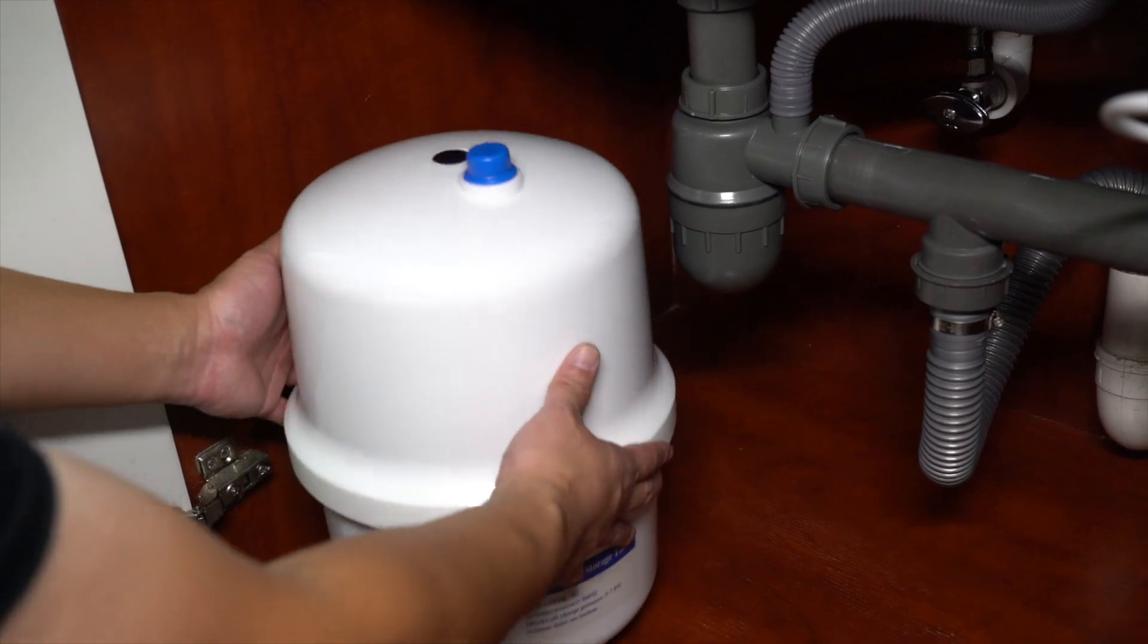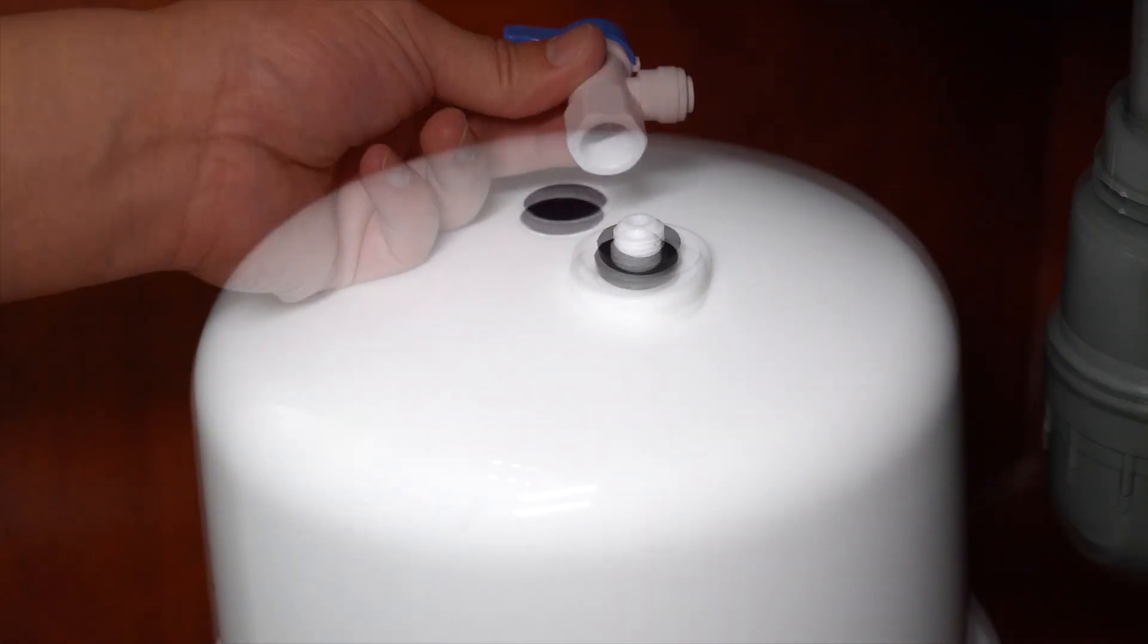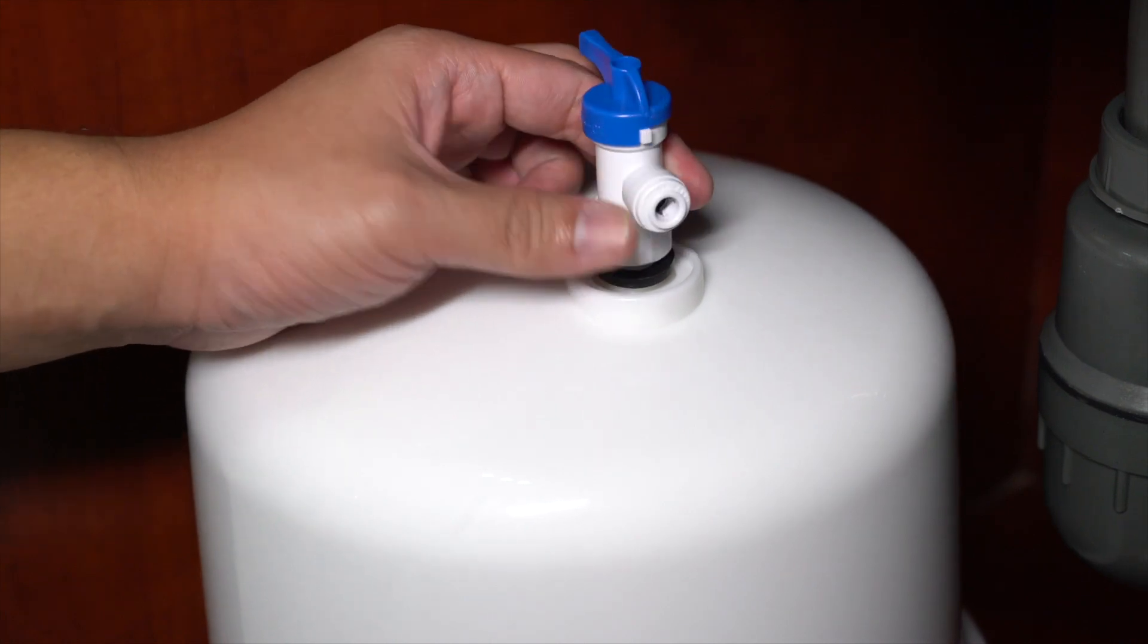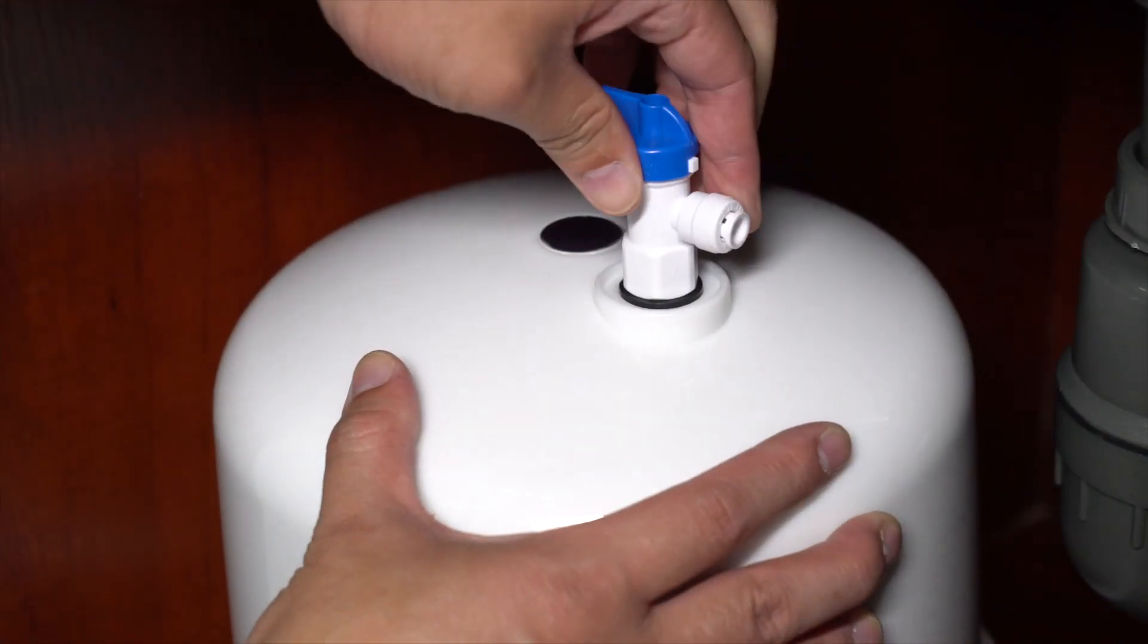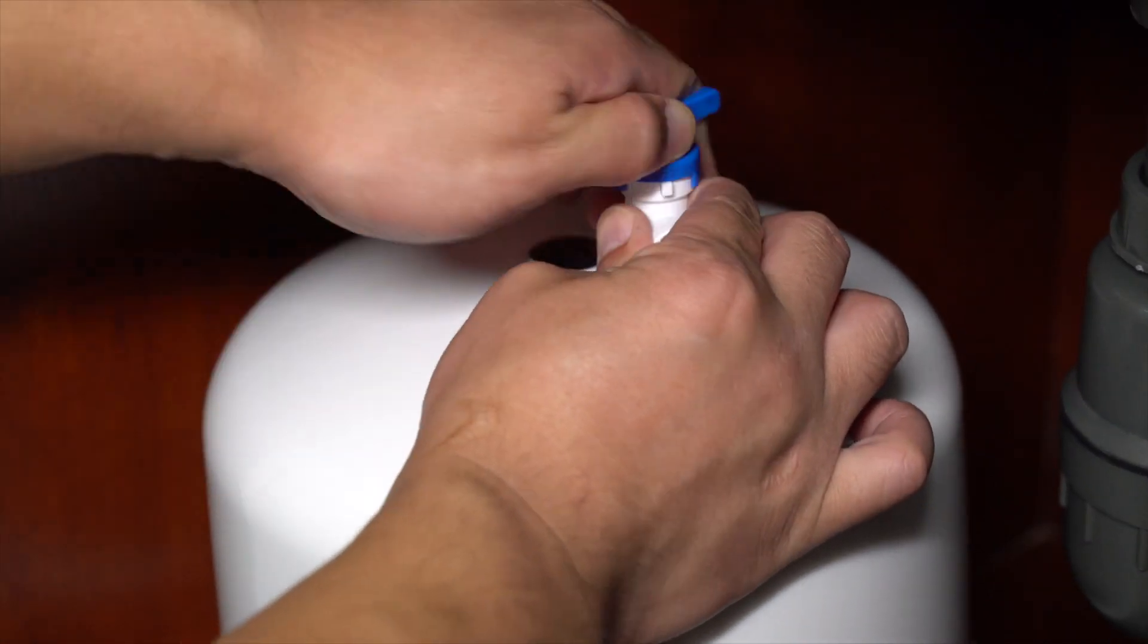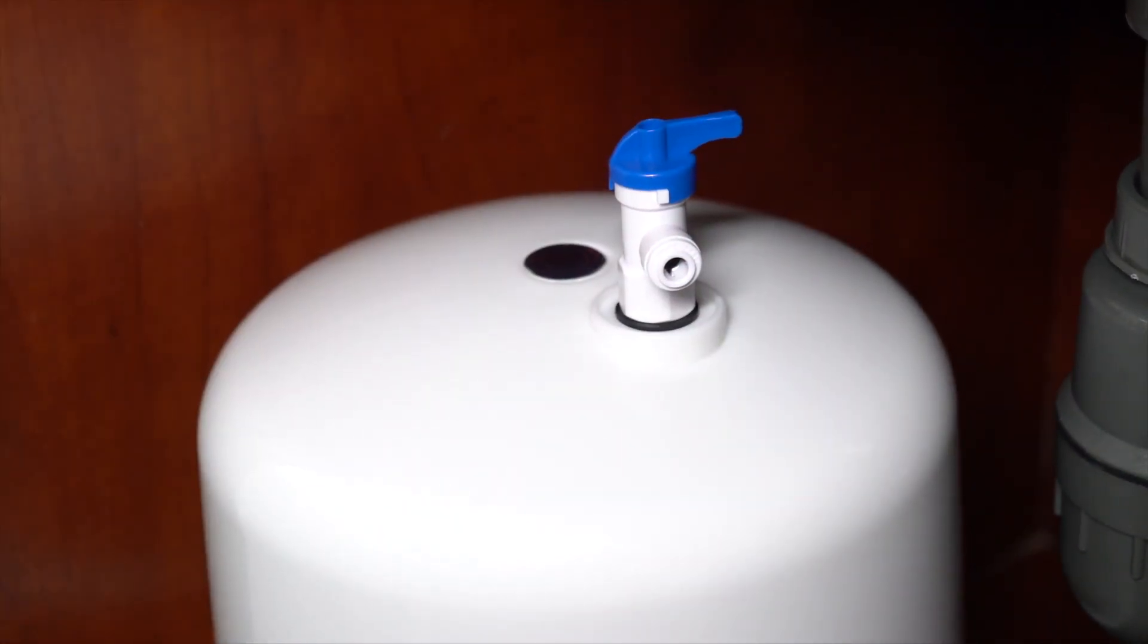Place the tank into position on the stand under the sink. Remove the protective cover from the pressure tank connection. Fit the tank ball valve and hand tighten onto the thread. Do not over tighten. It does not need to be very tight to obtain a watertight seal.